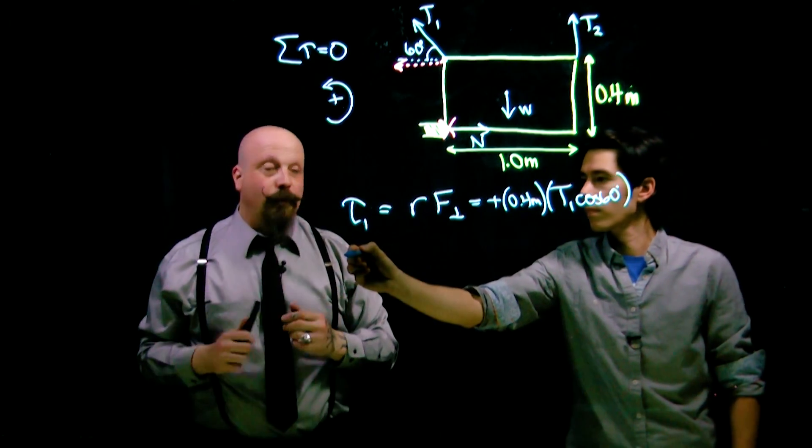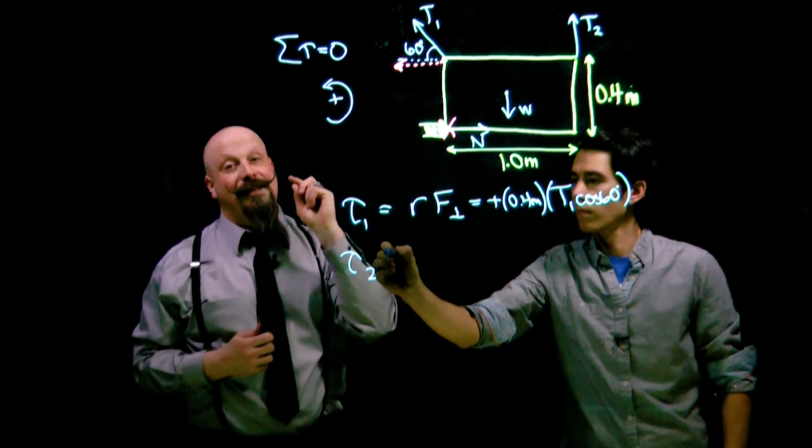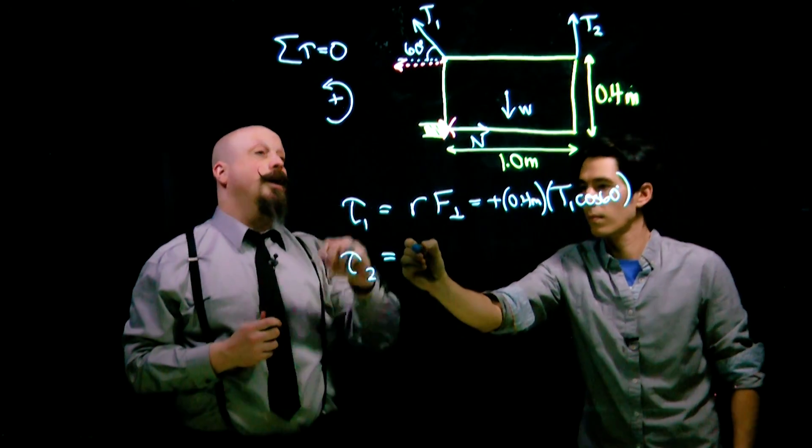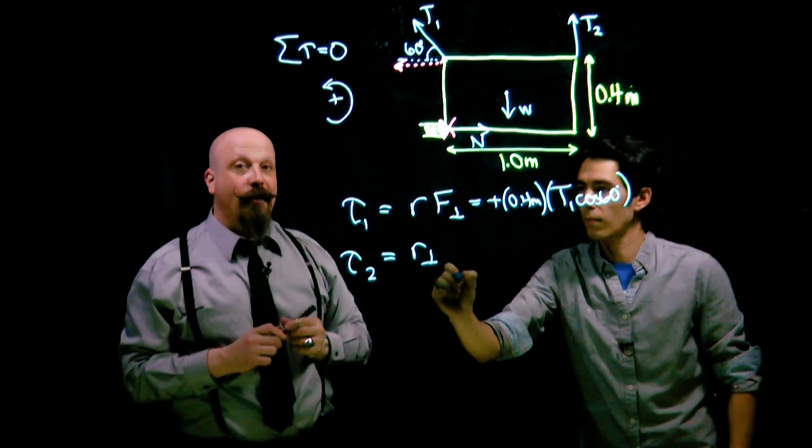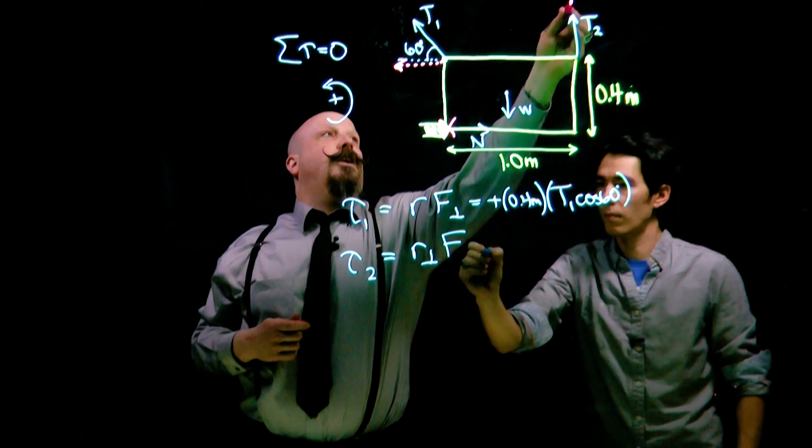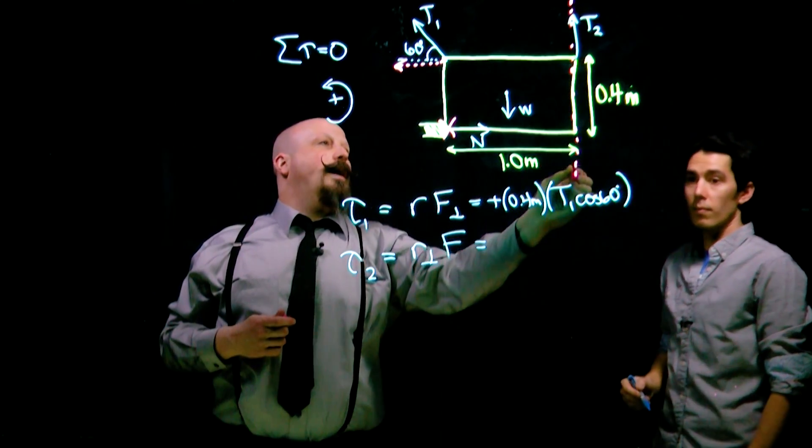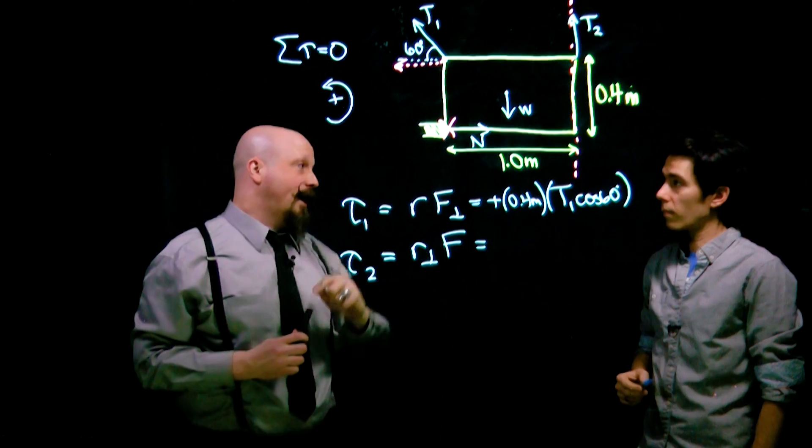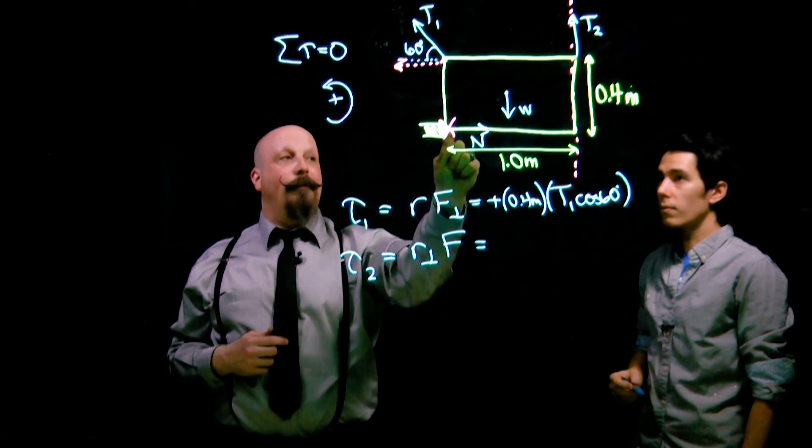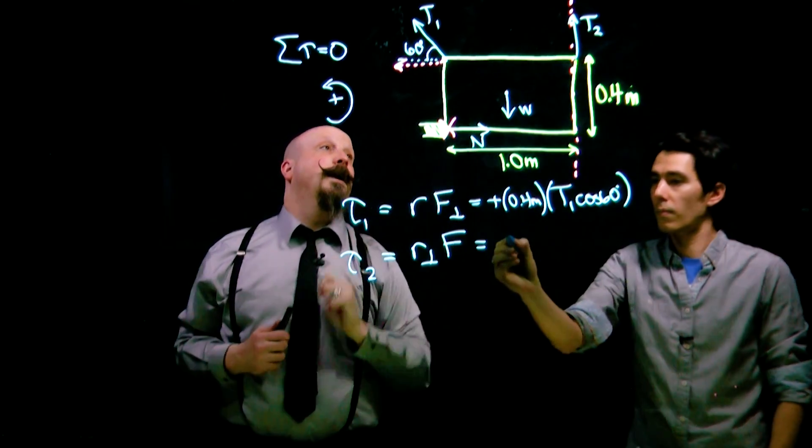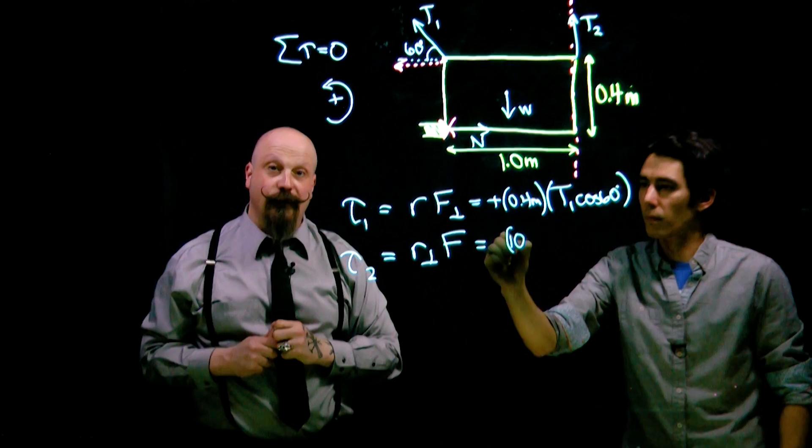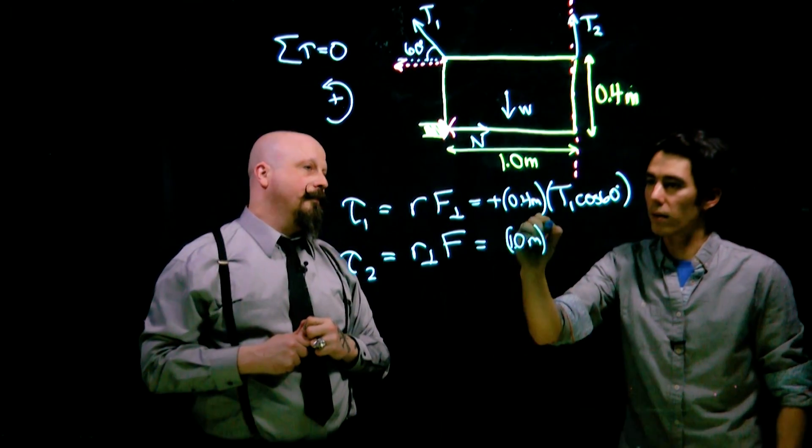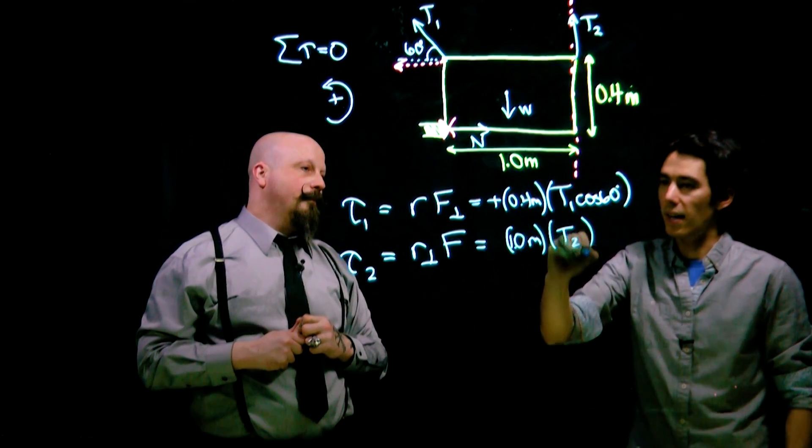Secondly, let's look at the torque due to T2. For T2, we're using the second technique for solving torque. You look at the full value of that force, extend a line of action going down parallel with that force, and then take the perpendicular distance to that line of action. In this case, from pivot to that line of action is one meter, and we take the full value of the force, T2.